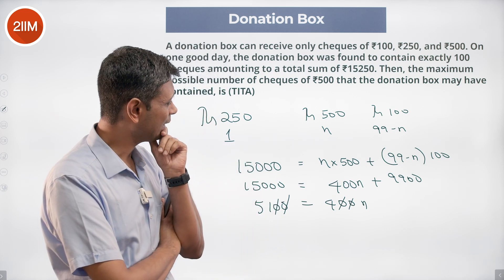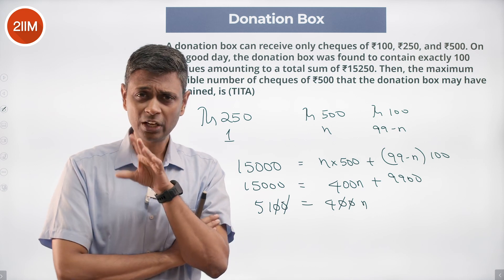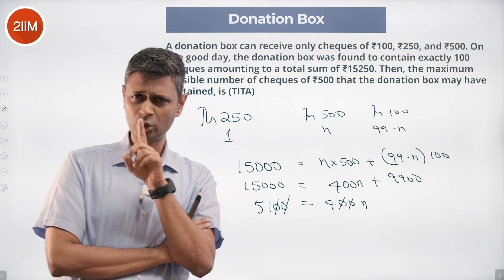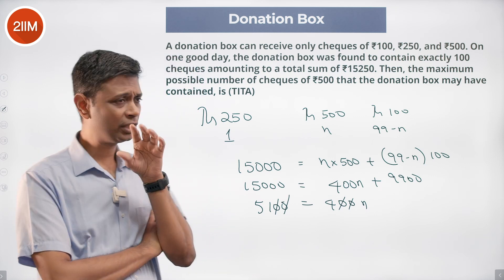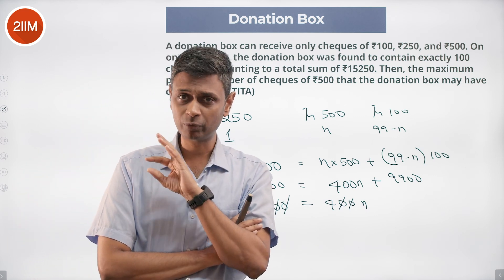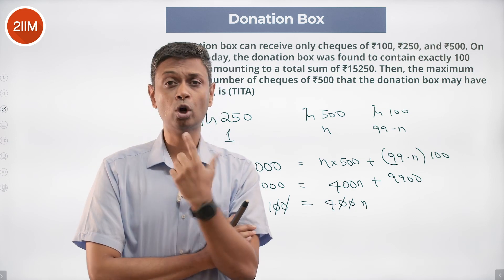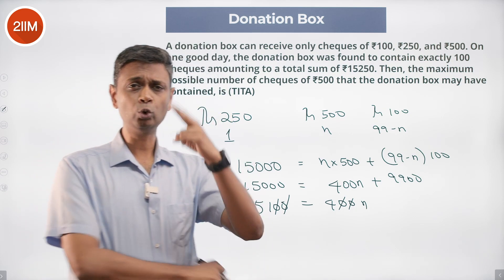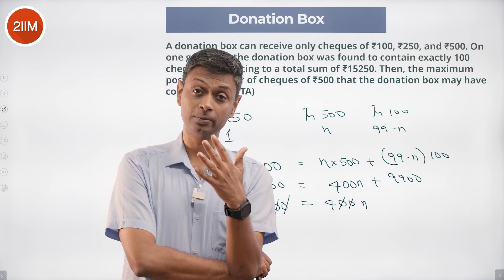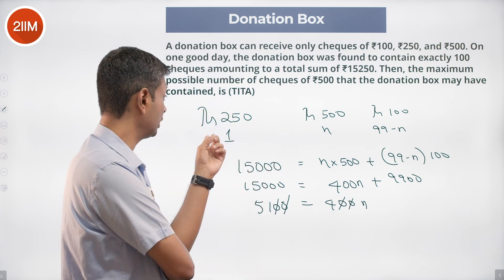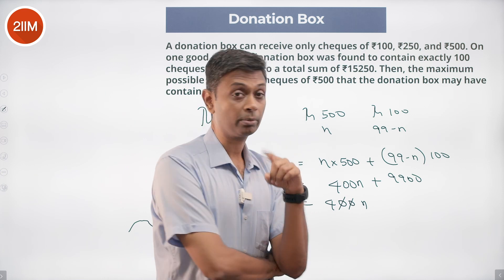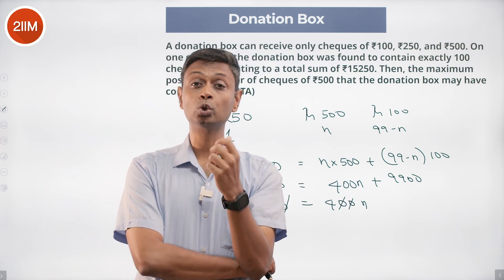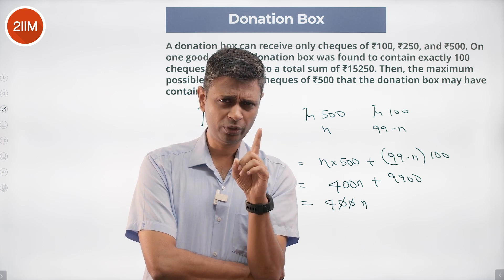So we need more 250-rupee notes. But if we have two 250-rupee notes, they add up to 500, which is a multiple of 100. Combined with 500-rupee notes and 100-rupee notes, the total would be a multiple of 100 — but our target is 15,250, which is not a multiple of 100. So we cannot use an even number of 250-rupee notes. We need an odd number. One 250-rupee note didn't work, so let's try three.